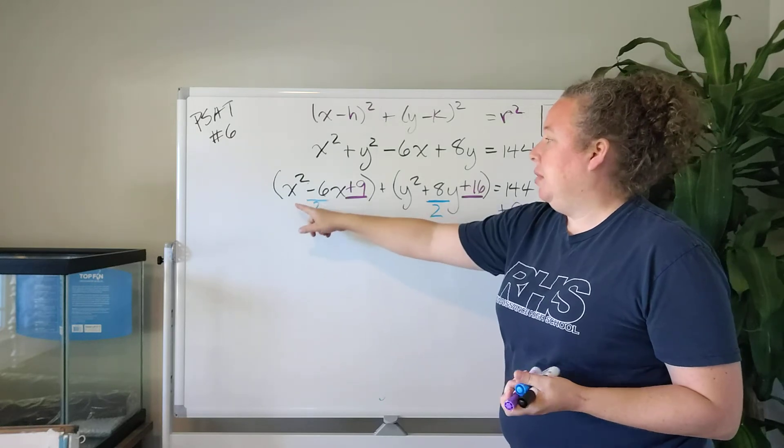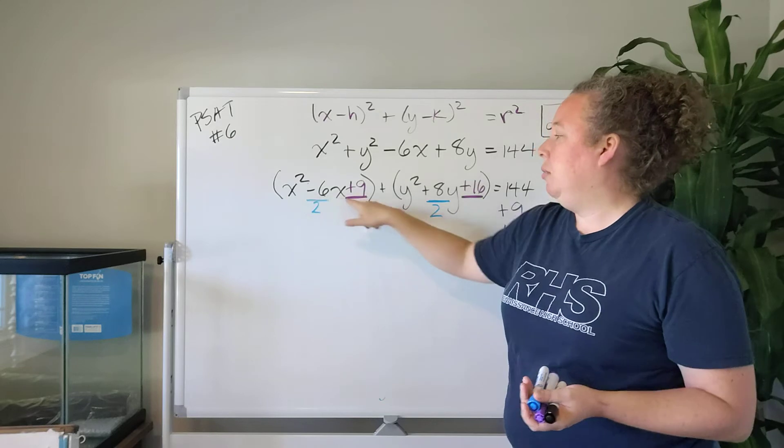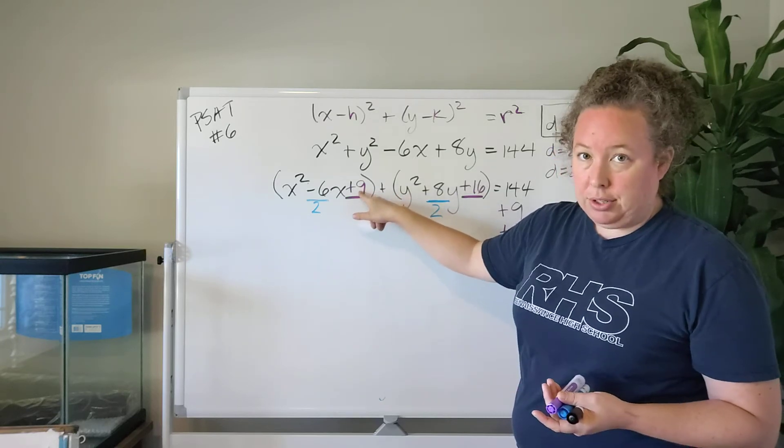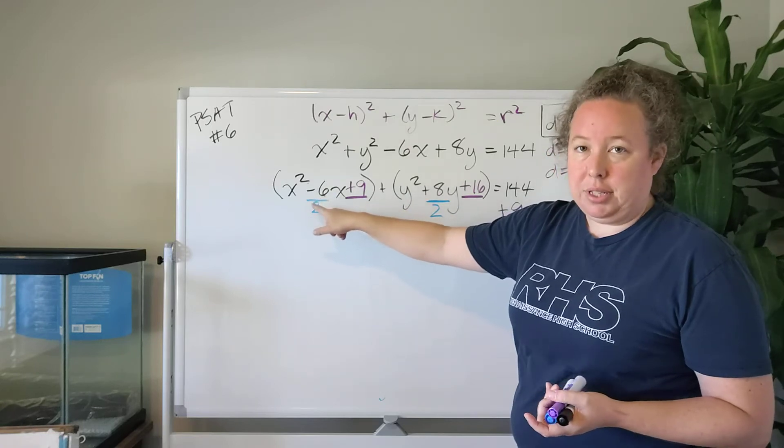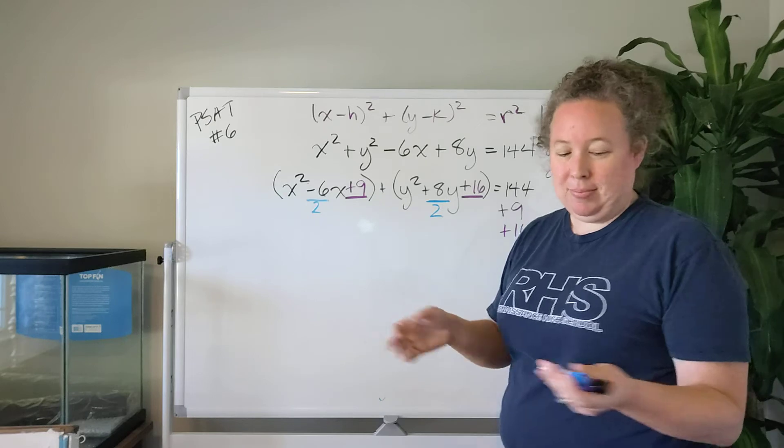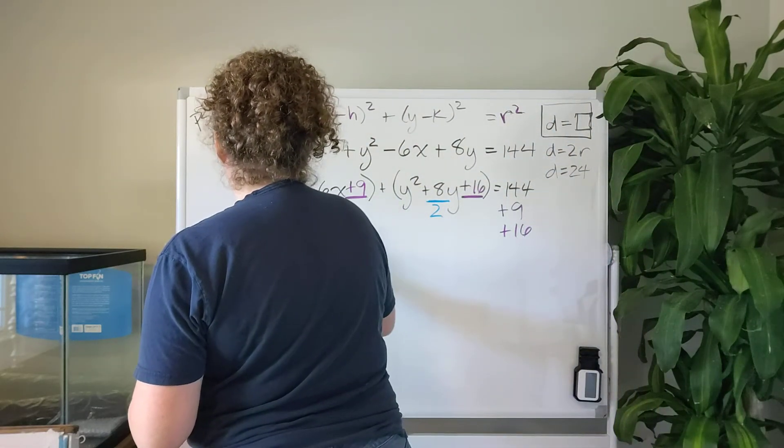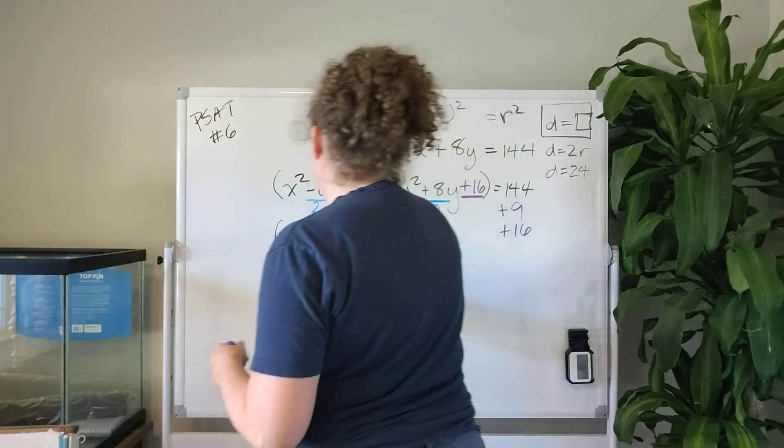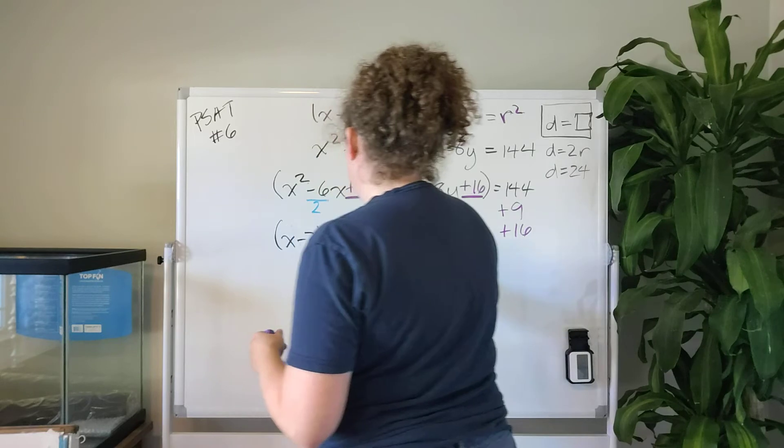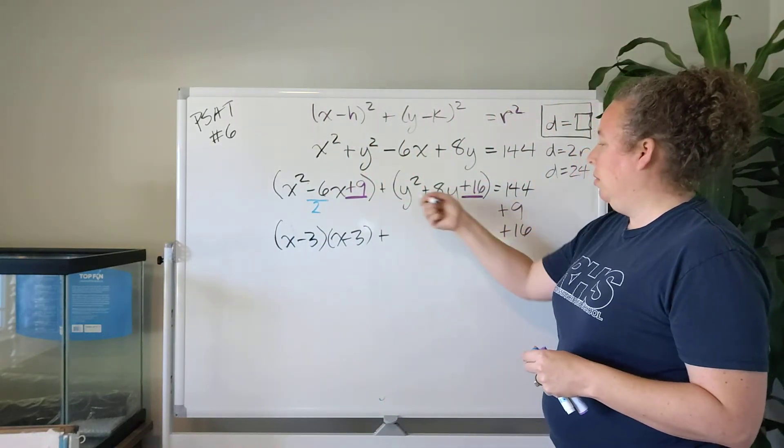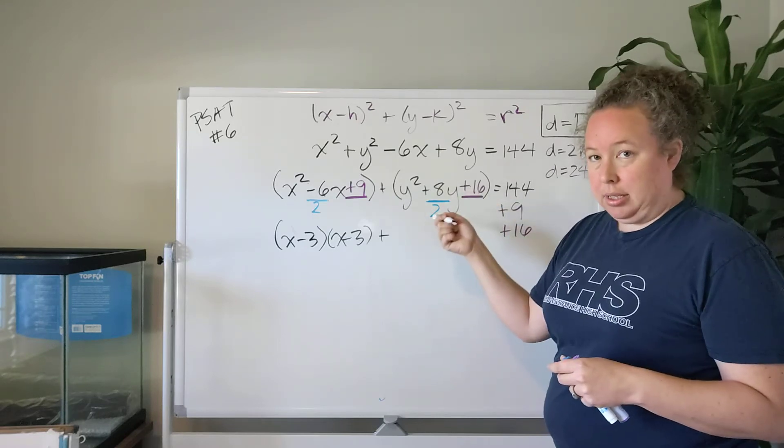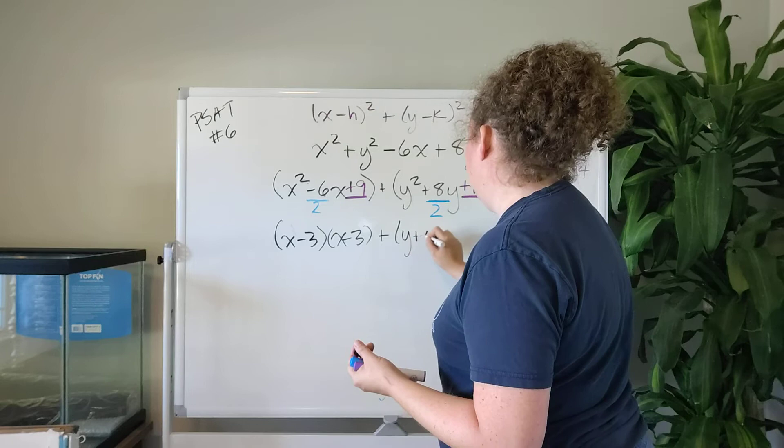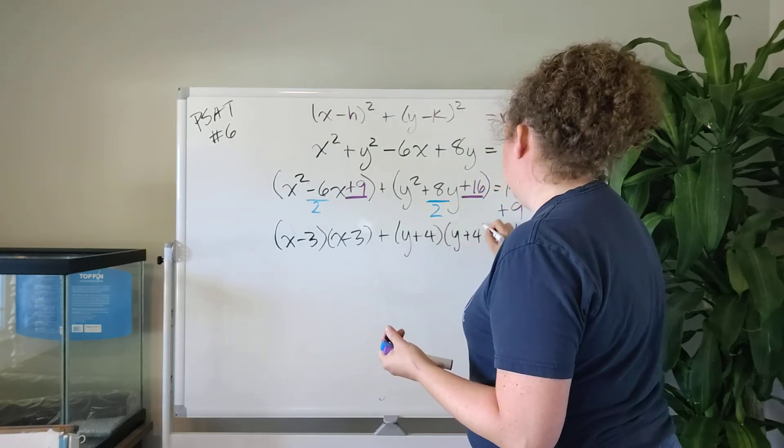We can see now the reason that we've done this. We can now remember when we are factoring an expression like this, we're looking for the numbers that multiply together to 9 and add together to negative 6. Well we know what that is. It's minus 3. So we can rewrite that as x minus 3 times x minus 3. And here also we know what multiplies together to 16 and adds together to 8, which is 4. The same 4 that we solved for by dividing 8 by 2. And so this is going to be y plus 4 times y plus 4.